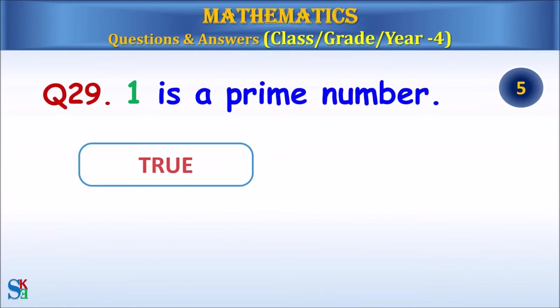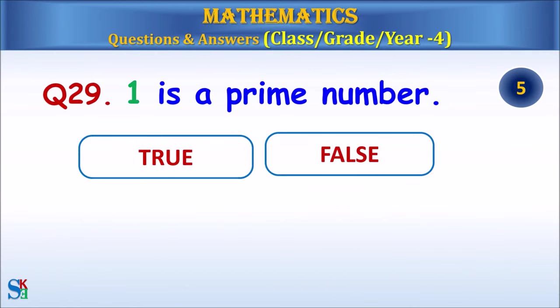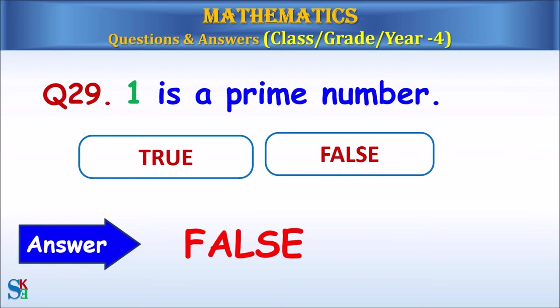Question 29: One is a prime number. True or false? The answer is false.